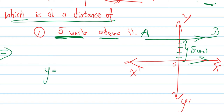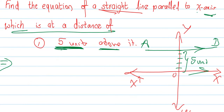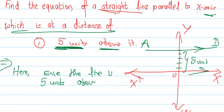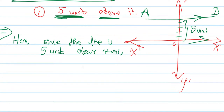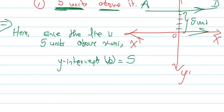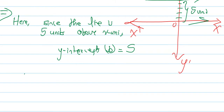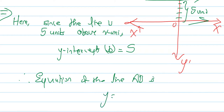So, y equals 5. That means the y-intercept b equals 5. The line is above the x-axis, 5 units, so the y-intercept is 5. Therefore, the equation of line AB is y equals 5.